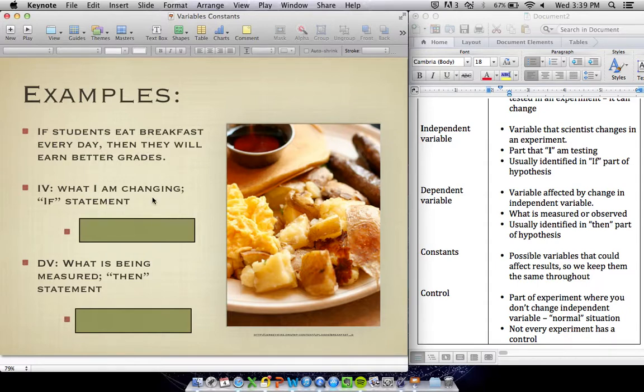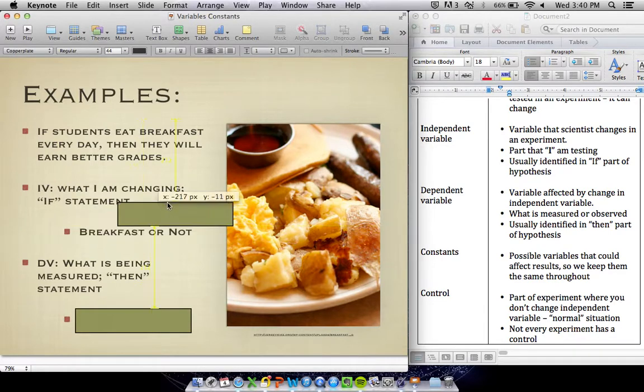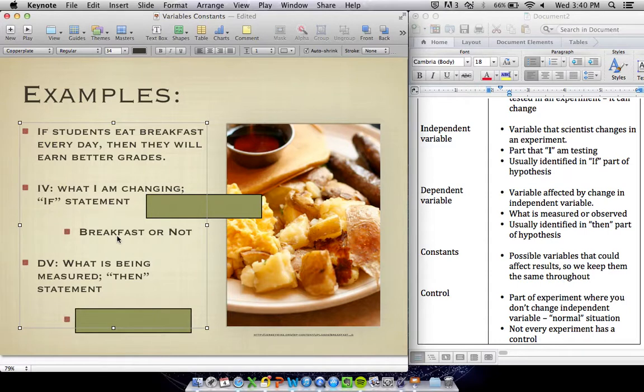What would our independent variable in this experiment be? We're going to look to the if statement. If students eat breakfast every day. So if I do an experiment, what am I going to be changing in my experiment from one group of students to the next? Well, to do this experiment, I'd need some students to eat breakfast, and I would need some students to not eat breakfast. So my independent variable would be whether or not the students get breakfast. That's what's different between my two test groups.